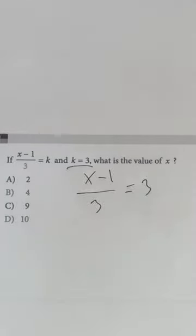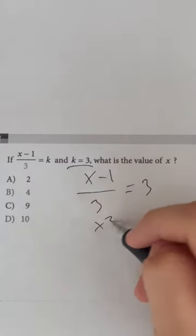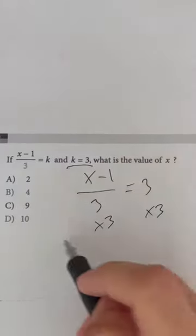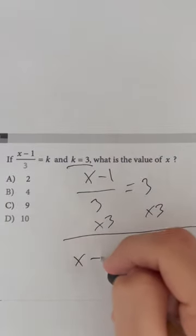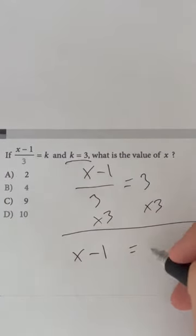Let's start by multiplying by 3 in order to get rid of the fraction, which will give us x minus 1 equals 9.